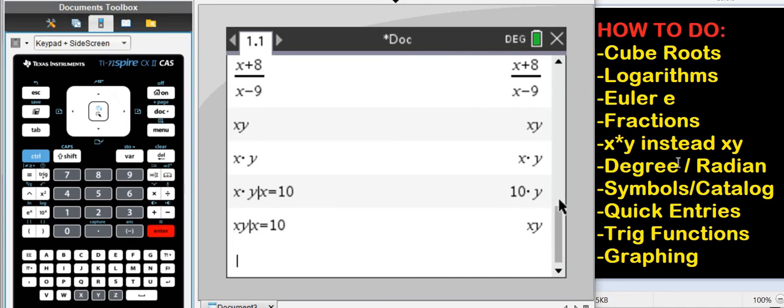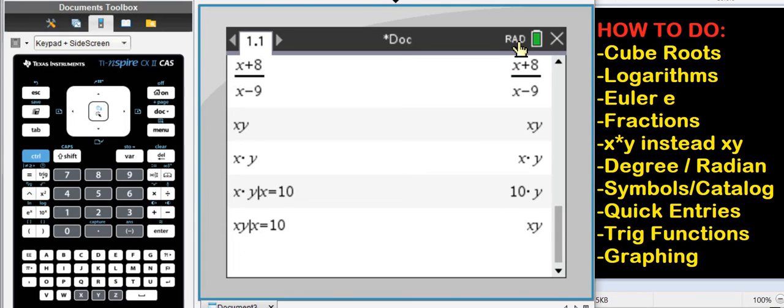Next, degree and radian. Notice up here it says degree. Change to radian by just clicking on it. It's that simple. Click, click, click. You change from degree to radian.